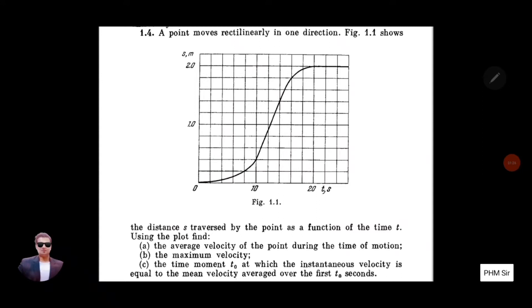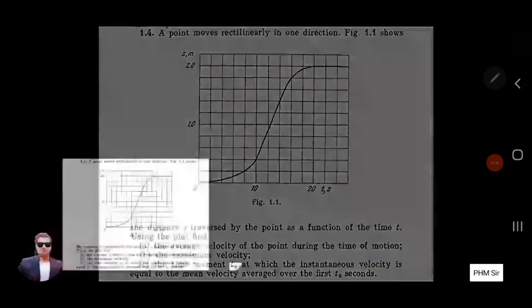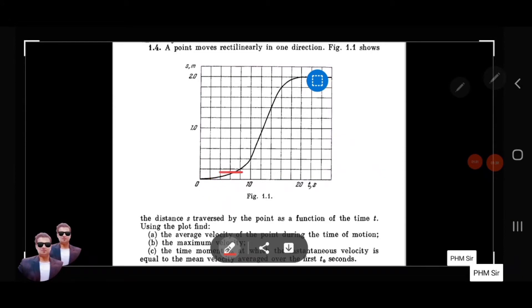Now let me understand the question. The first question is: what is the average velocity of this motion? This means we need to calculate average velocity. For the total motion, we need to make a straight line connecting the motion from start to end.